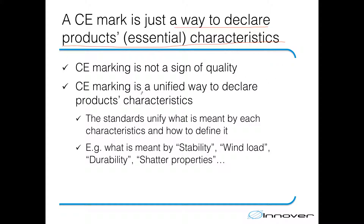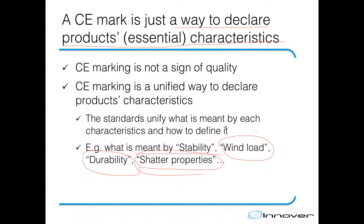What the CE marking also does is unify the way in which product characteristics are declared. Basically, the standard unifies the vocabulary. With CE marking, there is only one way to declare stability and what is meant by stability. There is only one meaning for wind load, only one meaning for durability, only one meaning for shadow properties, and so on. With harmonized standards, there is only one way to define product characteristics.